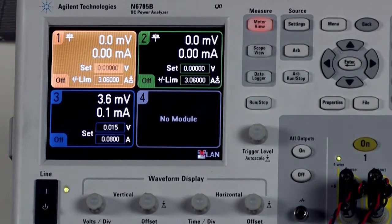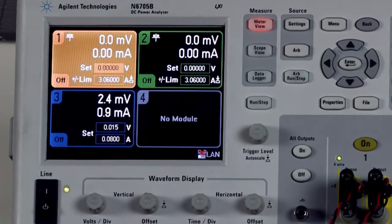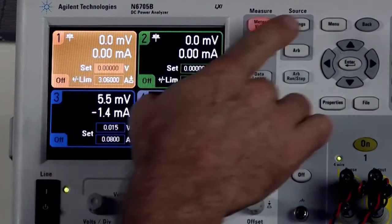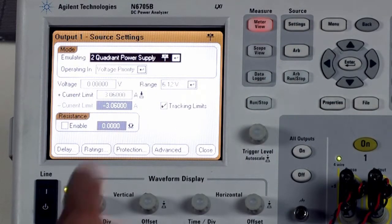Now moving on to step two, we need to configure the SMU. We already have number one highlighted. We're going to hit the settings key and look at some of the basic configuration.